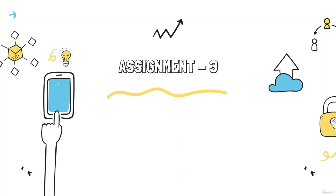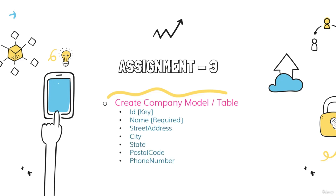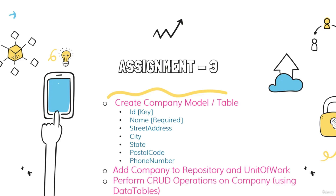In the next video we want to enhance our application. It is time for the third assignment where you have to do something you have already done before. You have to create a new model or a new table in the database with the name of company, and the table name will be companies. Inside there, these are all the properties you have to create — name will be the required property and everything else will be optional. You also have to add company to the repository and unit of work, and finally perform CRUD operations on company using data tables. Good luck with that assignment, and I will show you how to do all of that in the next video.